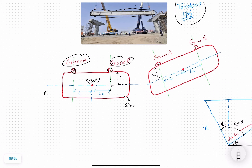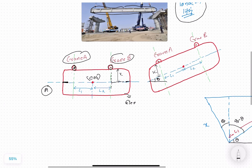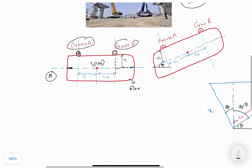There are two cases. In the first case, there is no tilt — no angle with the horizontal. In the second case, there is some tilt with the horizontal called theta. In both cases, we have to calculate the load coming on each crane. For such cases, we use the lever rule. The lever rule is directly applied, but for the second case, we need to do some modification — we have to do a translation of the axis.